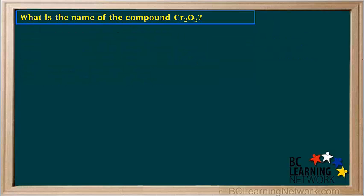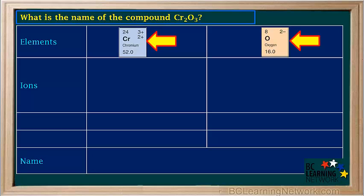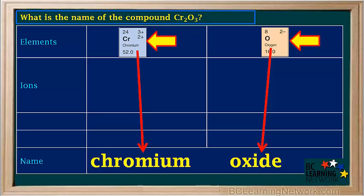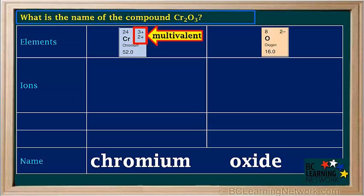Let's go through an example question. What is the name of the compound Cr2O3? We find the elements chromium, number 24, and oxygen, number 8, on the periodic table. We know the name will be chromium oxide, so we write chromium and oxide down here. It's a binary compound, so the non-metal's name oxygen is changed to oxide in the compound name. Looking at the metal chromium, we see that it has more than one possible charge, so it's multivalent. Therefore, we have to work out which charge on chromium is used, and what roman numeral in the name will be.